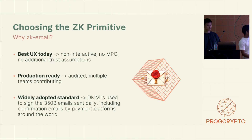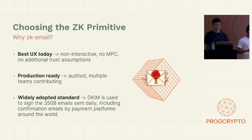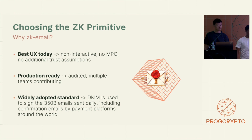So why ZK email? Because of three reasons. First, it has the best UX today — it is non-interactive, there's no MPC stuff going on in the backend and no additional trust assumptions. Second, it is production ready: it has been audited twice and multiple teams are contributing to it. And finally, emails are the most widely adopted data standard in Web2. DKIM is used to sign the 350 billion emails sent daily, including confirmation emails by payment platforms around the world.